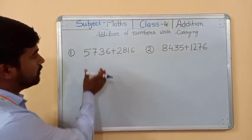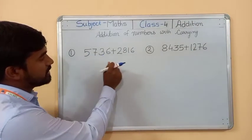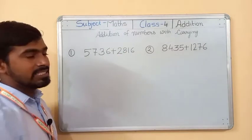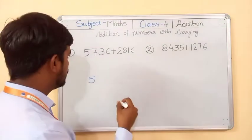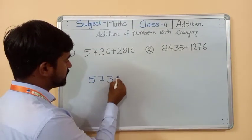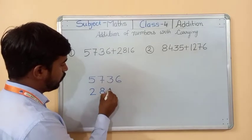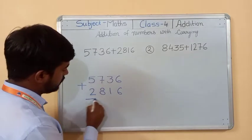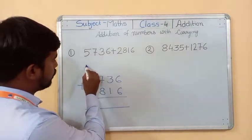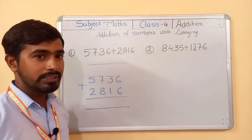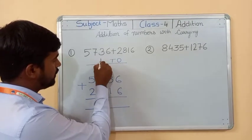In the first question we have given two four-digit numbers. The first number is 5736 and the second is 2816. So how to add this number? First of all, write in column method. Write 5736, now 2816. Place a symbol of addition and draw two lines. So this is called the column method. Now write the place value: ones, tens, hundreds, and thousands.